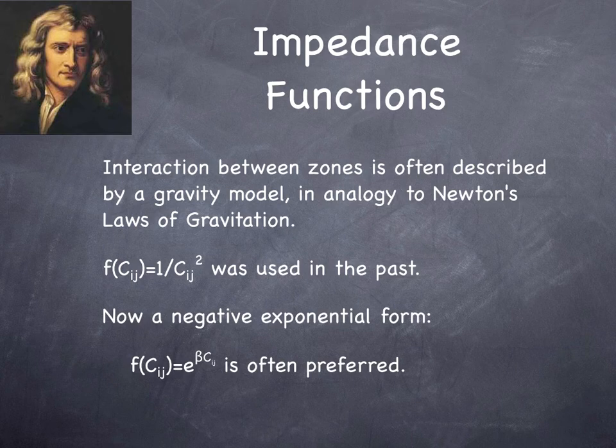There are many ways that we can think about impedance. Impedance is the difficulty of going between two places. It turns out that a negative exponential probably fits the data a little bit better than 1 over travel time squared, or even 1 over travel time to some arbitrary coefficient, because the shapes of the curves just follow a little bit more closely.